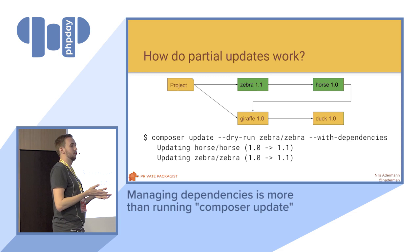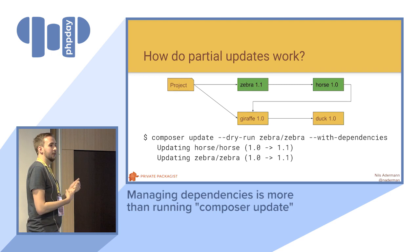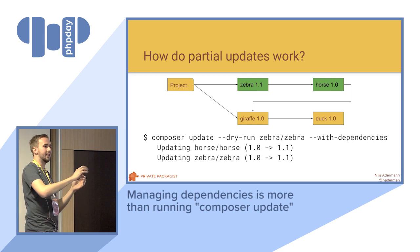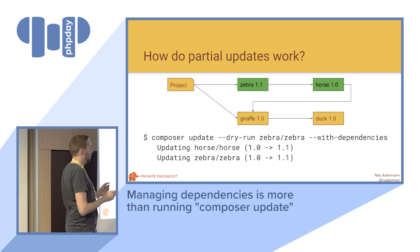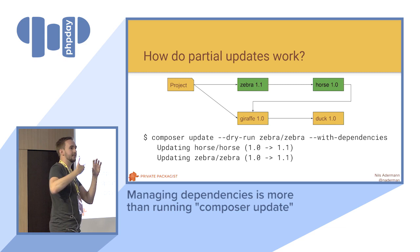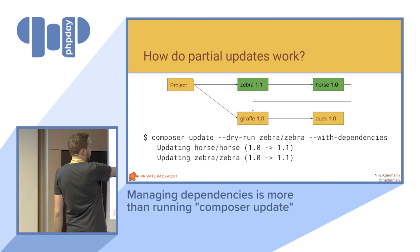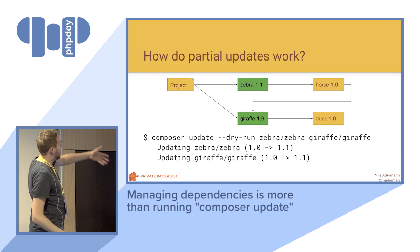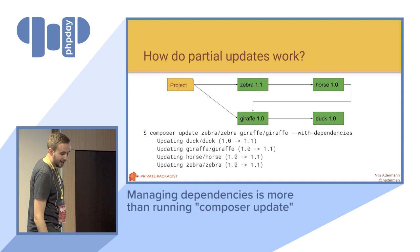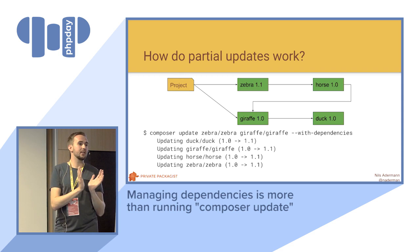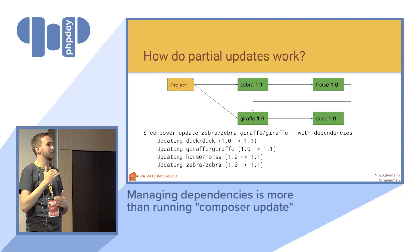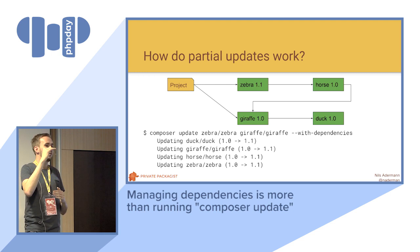The assumption in Composer is that every dependency you declare in your own composer.json is something that you want to explicitly manage yourself, because otherwise you wouldn't have put it in there. That's why things like version aliases only work on the root level — it forces you to explicitly manage that dependency. So if you do want to update Zebra, Horse, Giraffe, and Duck in that round, you can run composer update on Zebra and Giraffe without dependencies — it'll just update those two — and then add --with-dependencies and it'll update all of them. The idea is that composer update lists the packages from your composer.json that you want to update, and --with-dependencies adds all their dependencies too, except the ones you manage in your composer.json yourself.